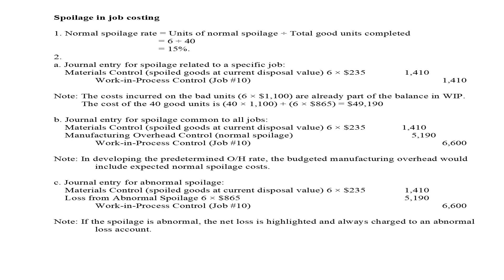To journalize the entry for abnormal spoilage: on the debit side, there is materials control or cash control for the value of the spoiled goods at the current disposal value. Work in process is on the credit side for $6,600, and the difference is recorded as loss from abnormal spoilage on the debit side.